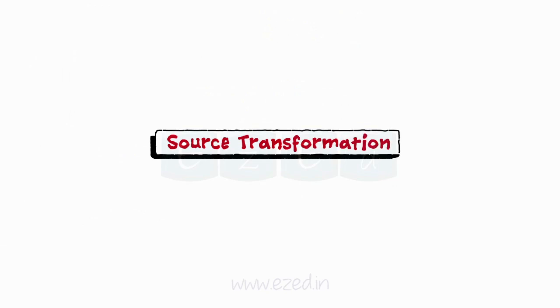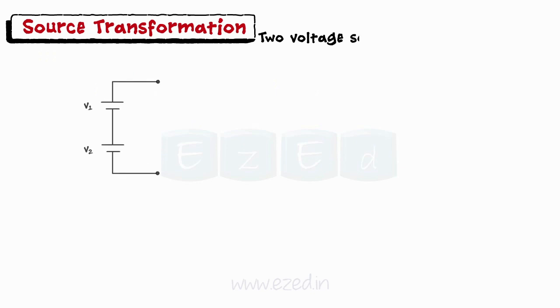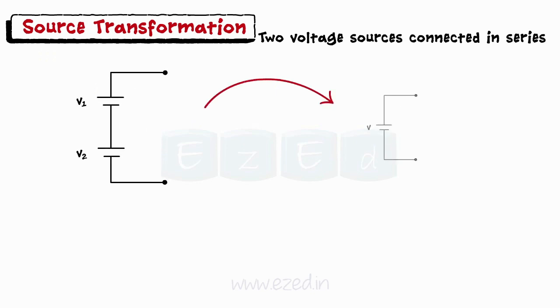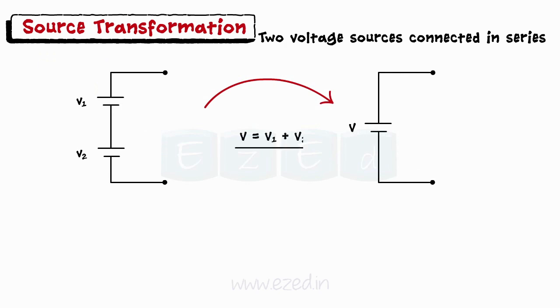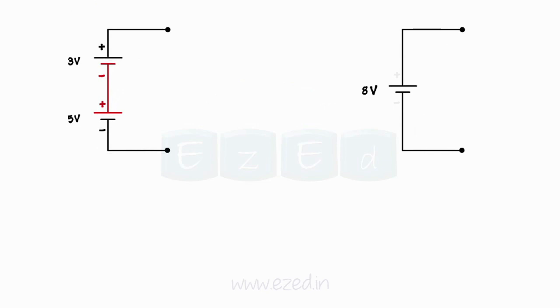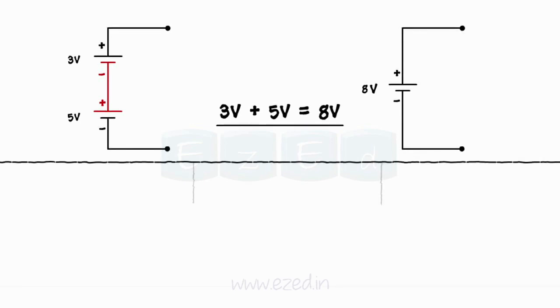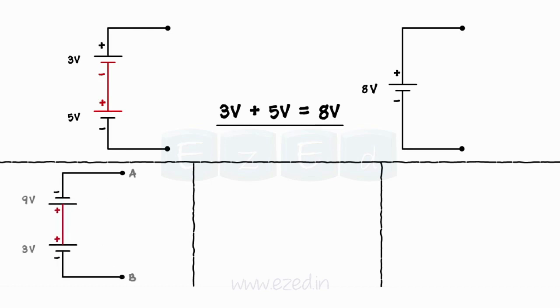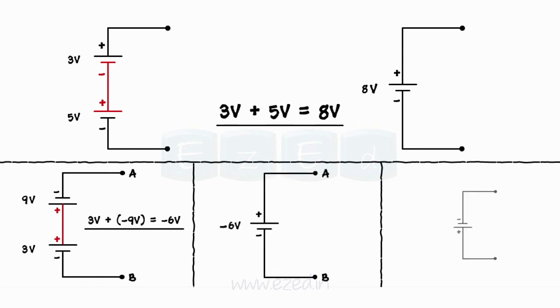The series rule of addition applies to voltage sources as well. Two voltage sources connected in series can be replaced by their equivalent voltage source obtained by algebraic addition of their magnitudes. When the negative terminal of the first source is connected to the positive terminal of the second, we simply add their magnitudes — thus three volts and five volts in series becomes eight volts. But when the positive of one battery is connected to the positive of the second, we subtract their magnitudes and assign the sign of the larger — thus nine volts and three volts becomes minus six volts.